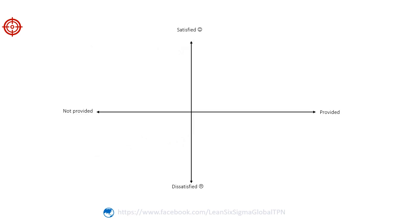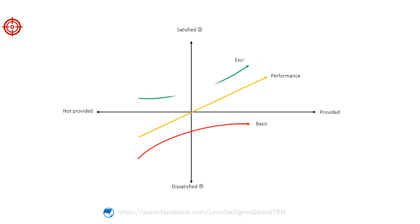The Kano model suggests that customer satisfaction is influenced by different types of product attributes. According to the Kano, these attributes can be classified into five categories: basic attributes, performance attributes, excitement attributes, indifferent attributes, and reverse attributes.